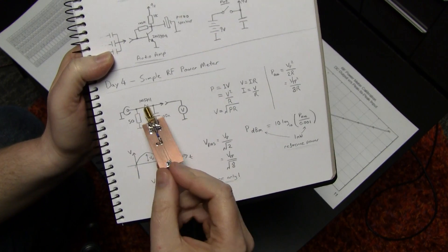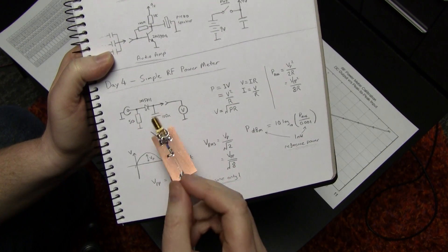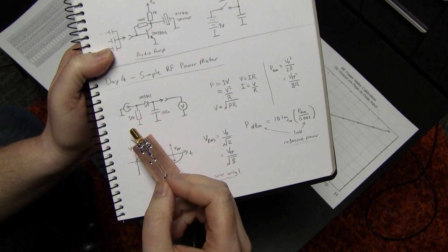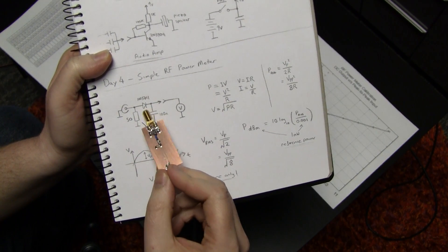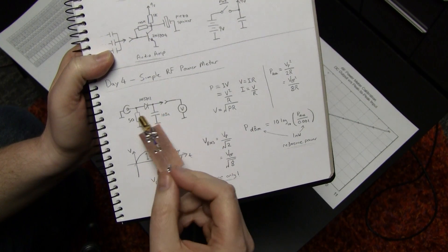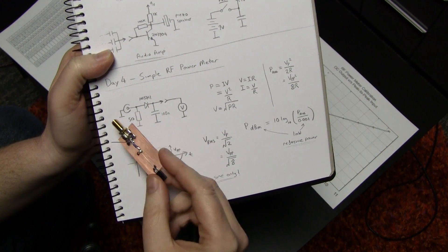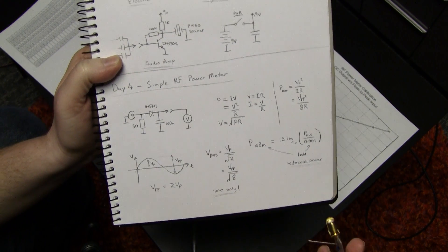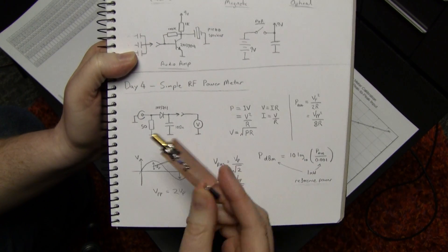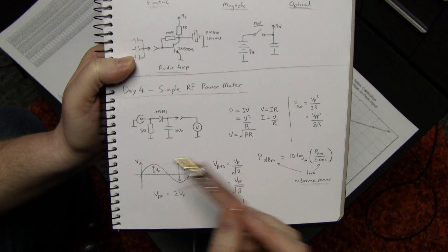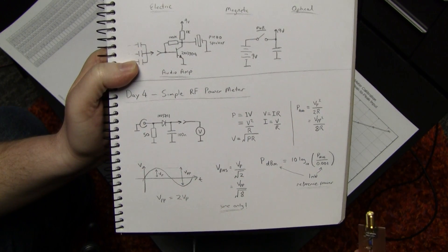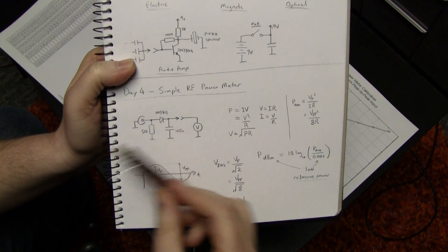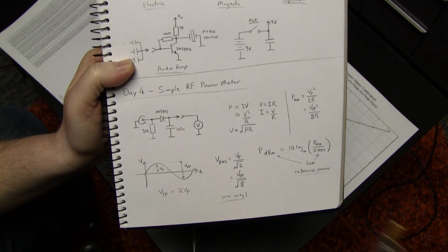Also, as the frequency increases, the capacitance of that diode starts to become significant, and this termination no longer looks like a pure 50 ohm resistance. For this diode, it's probably like 2 picofarads, something like that, so for low frequencies, HF, it's fine. As you get up into VHF, it starts to become more problematic and you need to compensate for it, either just by calibrating it, or measuring in some way, or actually modelling and maybe putting a compensation network in front of it.